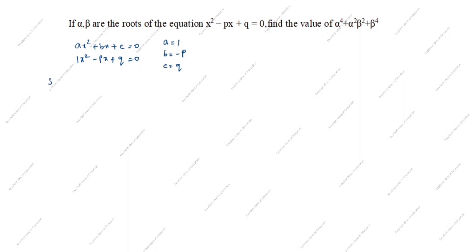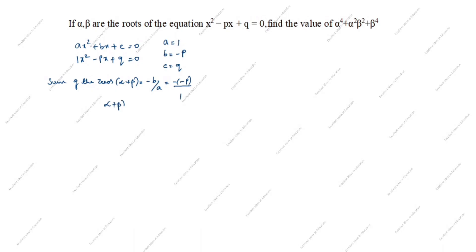What is the sum of the zeros formula? Alpha + beta = -b/a. What is b? b is -p. Already minus is there, so minus of minus p divided by a which is 1. Therefore alpha + beta = p.